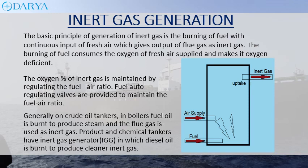Generally, on crude oil tankers, fuel oil is burnt in boilers to produce steam and the flue gas is used as inert gas. Product and chemical tankers have an inert gas generator (IGG) in which diesel oil is burned to produce cleaner inert gas.